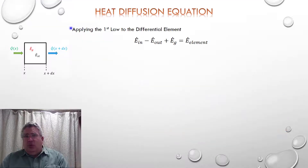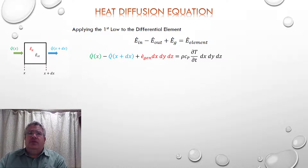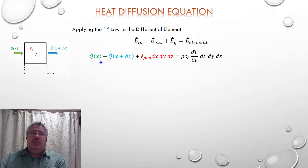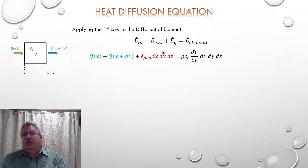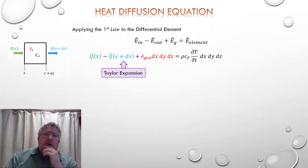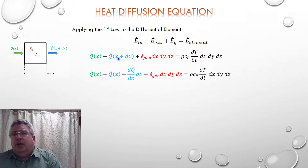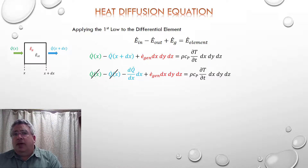Now let's go back to the heat diffusion equation. Applying the First Law: ė_in − ė_out + ė_gen = rate of change of energy in the element. In our notation: q̇_x − q̇_{x+dx} + the energy generation term = rate of change of energy. Applying the Taylor series expansion to q̇_{x+dx} and substituting, the two q̇_x terms cancel out, leaving us with −(dq̇/dx)·dx plus the generation and storage terms.